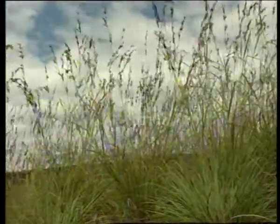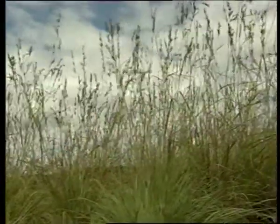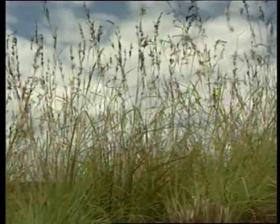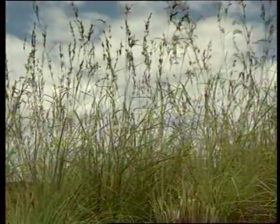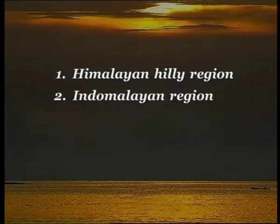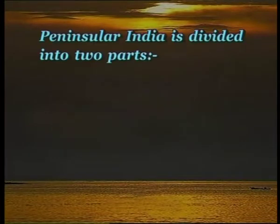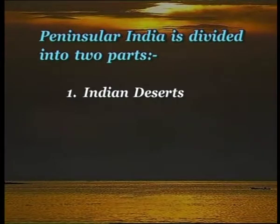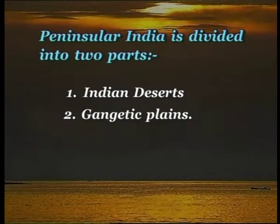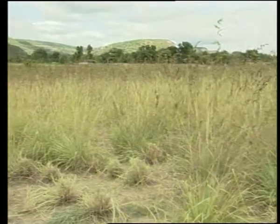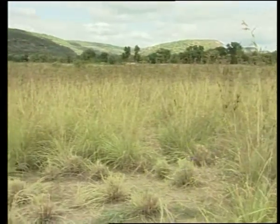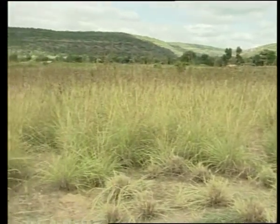India is divided into three biogeographical regions: the Himalayan-Hill region, the Indo-Malayan region, and Peninsular India. Peninsular India is further divided into two parts — Indian deserts and Gangetic plains. Madhya Pradesh comes under the second region, that is, the Gangetic plains.